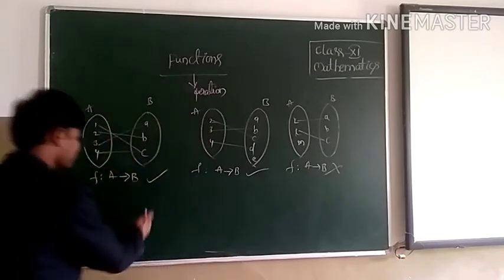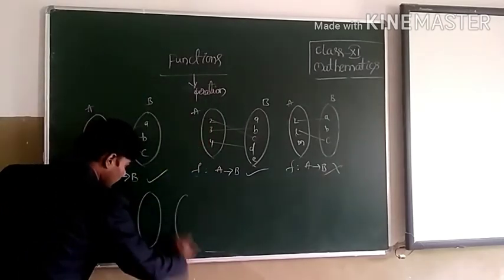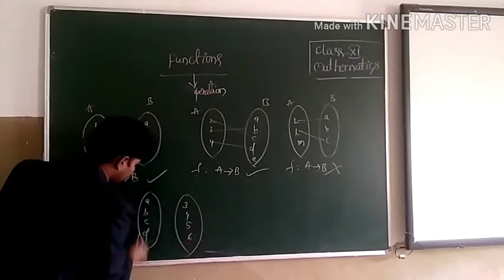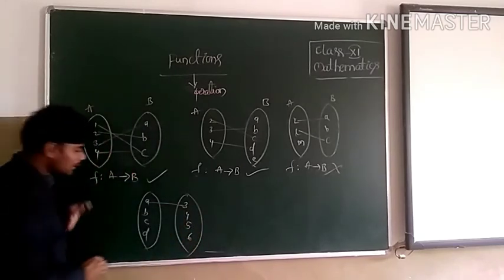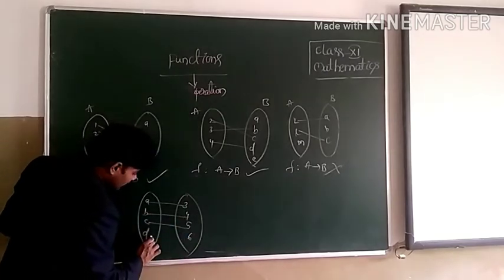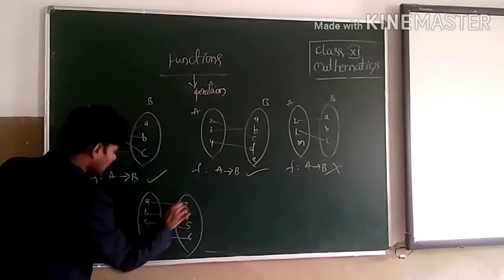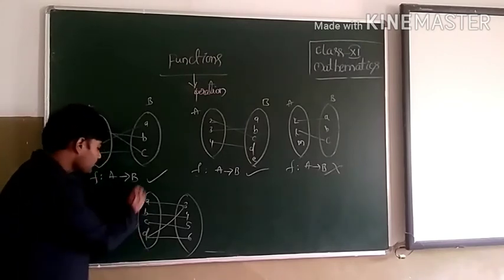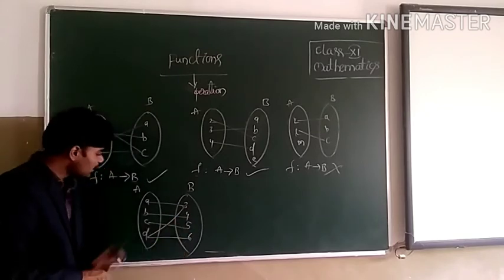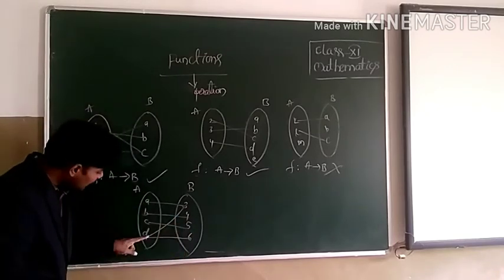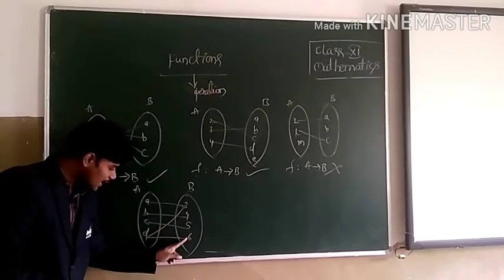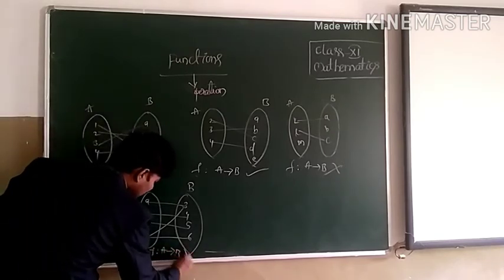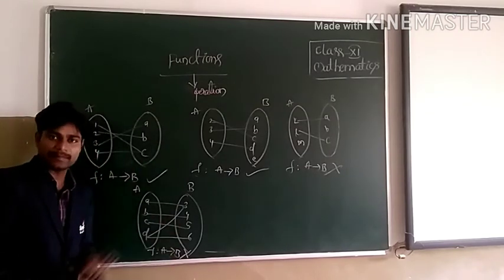Another example. Set A = {A, B, C, D} and set B = {3, 4, 5, 6}. A is related to 3, B is related to 4, C is related to 5, and D is related to 6. But D is also related to 3. So here, A, B, and C have only one image in B, but D has two images — 3 and 6. So this is also not a function because D does not have a unique image in set B.